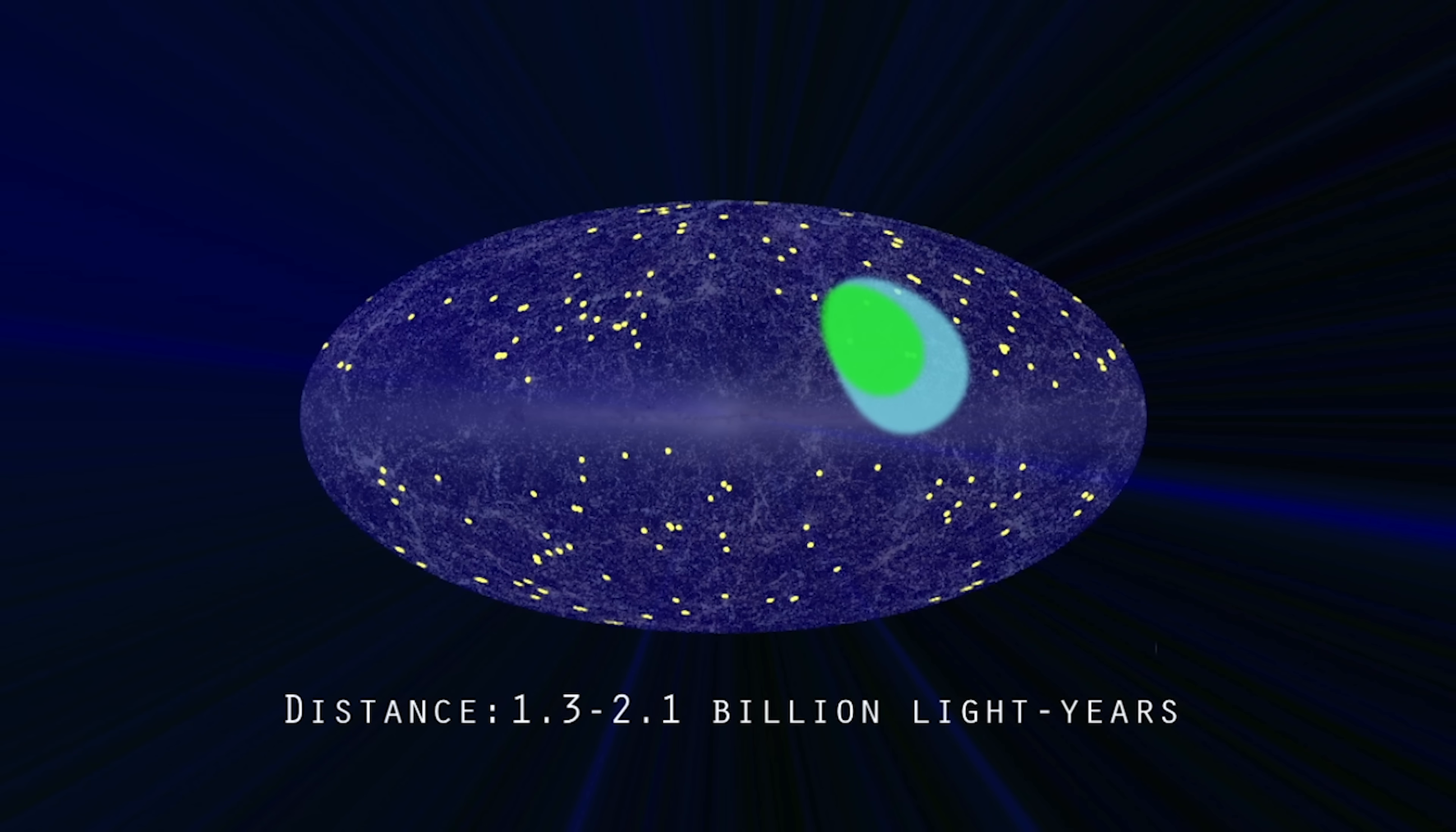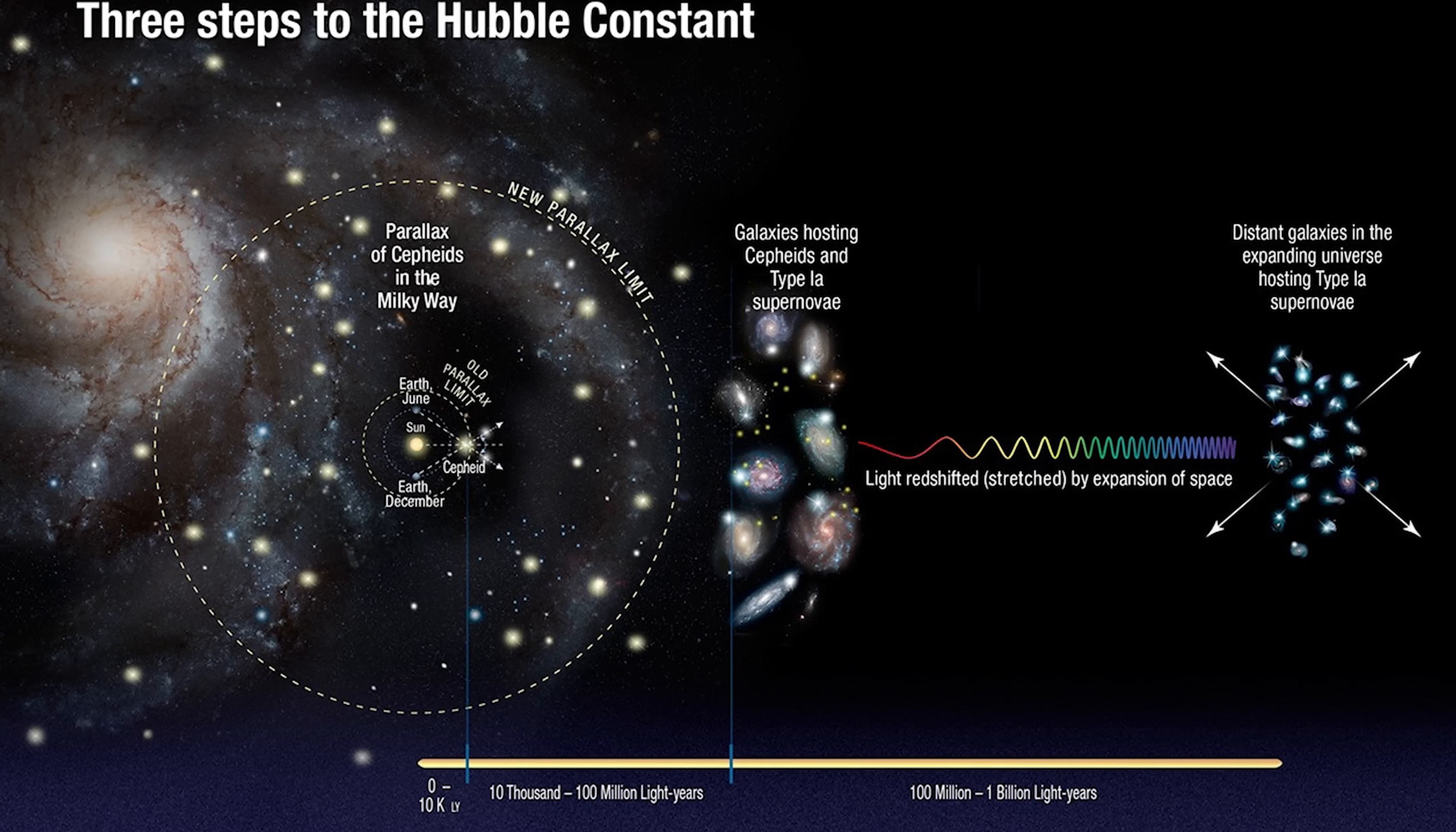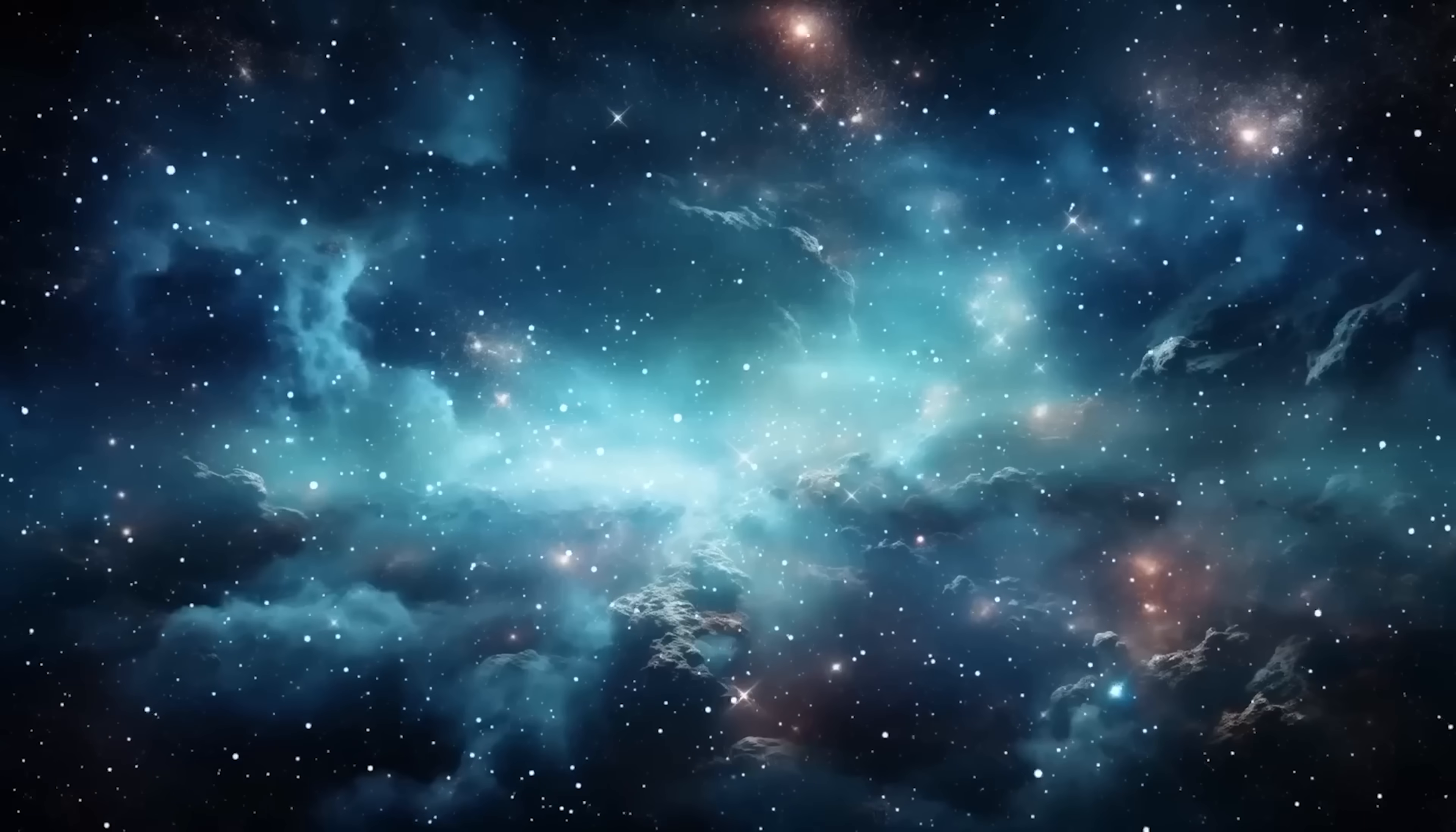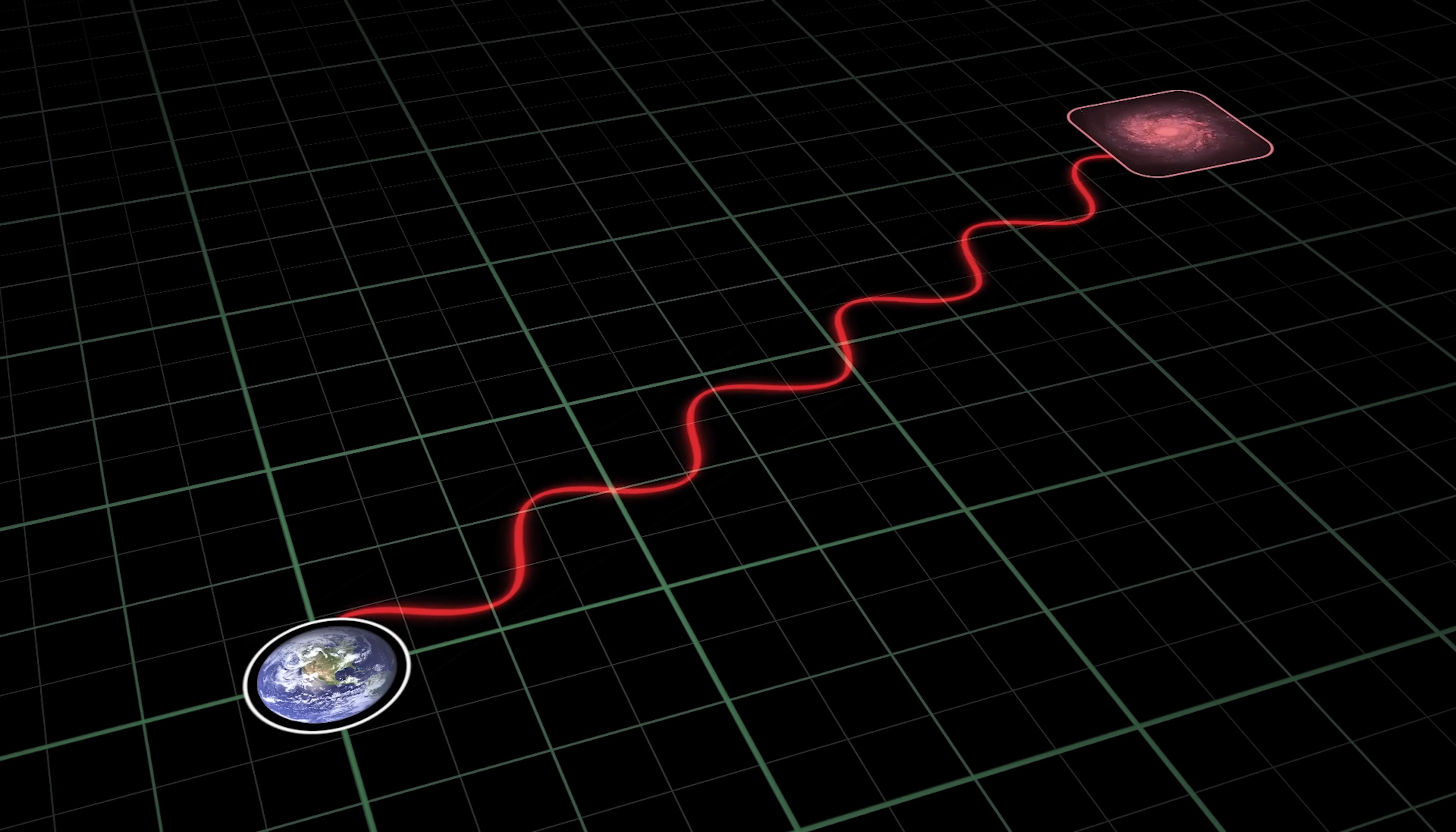That number became gospel, printed in textbooks, spoken in documentaries, memorized by students. But the other measurement, the expansion rate of the universe, known as the Hubble constant, began to tell a different story. When scientists used nearby galaxies to calculate expansion directly, the numbers came out higher. Higher expansion means a younger universe, around 12.5 to 13 billion years old.